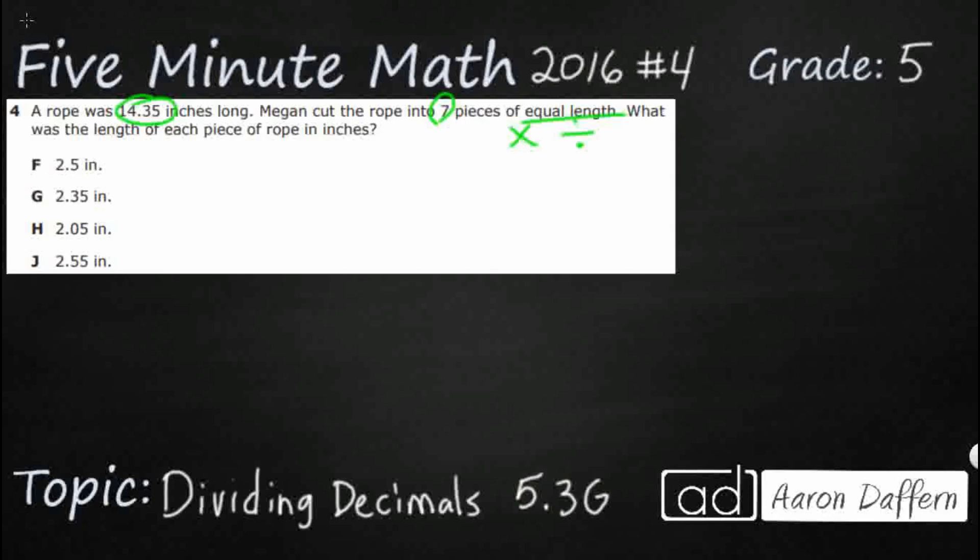Well, if we take a look at our numbers, 14 and 35 hundredths and 7, then it looks like multiplication is not going to work because take a look at our answer selections. They all have a 2 point something. So it looks like we are going to be having to use our division here. And so it is going to be 14 and 35 hundredths divided by 7.